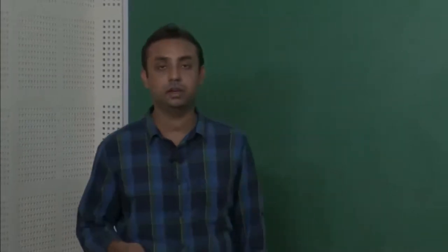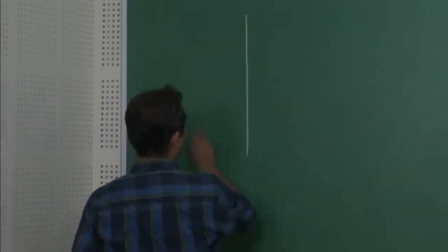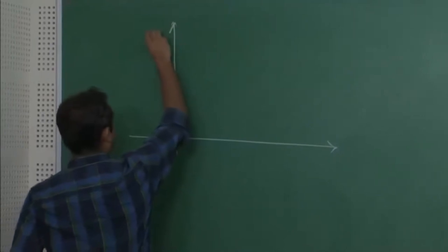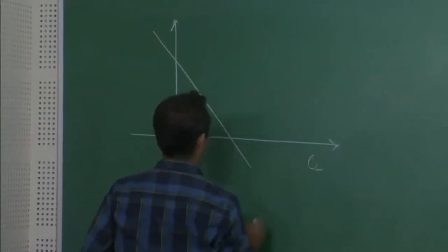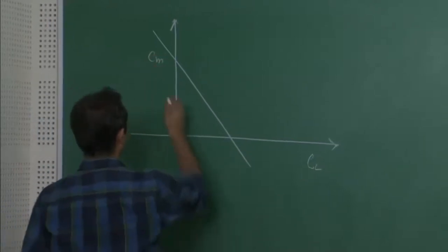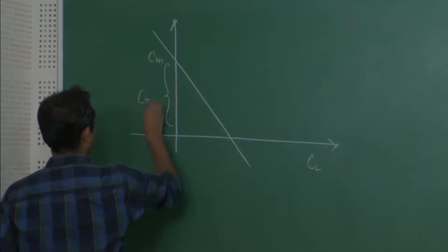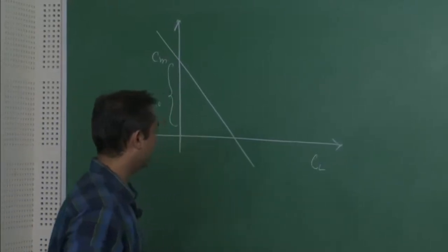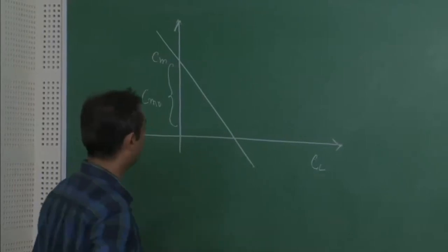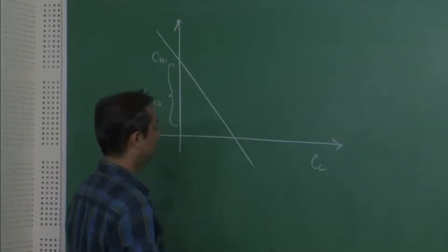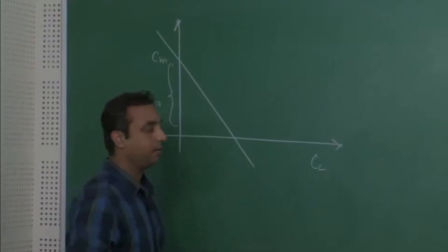What is the significance of an elevator? As we saw yesterday, for an aircraft to be statically stable, your CM versus alpha or CM versus CL curve should have a negative slope and a positive CM0. We calculated that in order to trim an aircraft at a particular CL, a certain tail setting angle is required. Now suppose we want to trim the aircraft at a higher value.